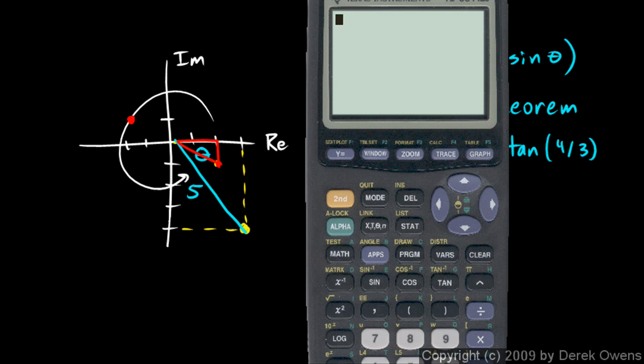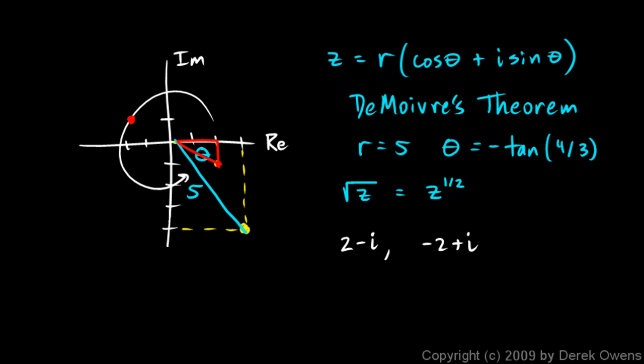And you can also see this on the calculator. If you take a graphing calculator and you just do the square root of, and our number is 3 minus 4i, so we'll just type 3 minus 4, and then the i is the second function on the decimal key. The square root of 3 minus 4i, and you press enter, and there it is, 2 minus i. Now notice the calculator just gave us one of the two answers. It just gave us this one, but this one we can also see as a solution as well.